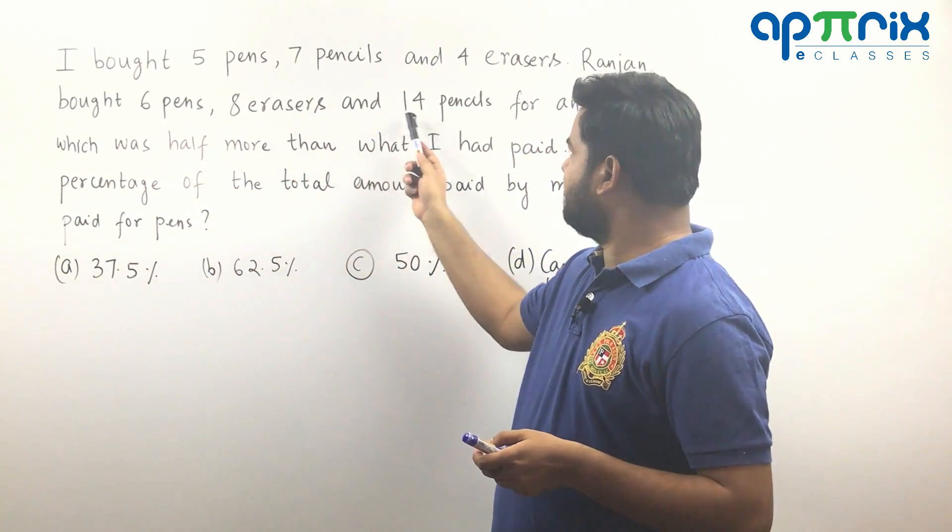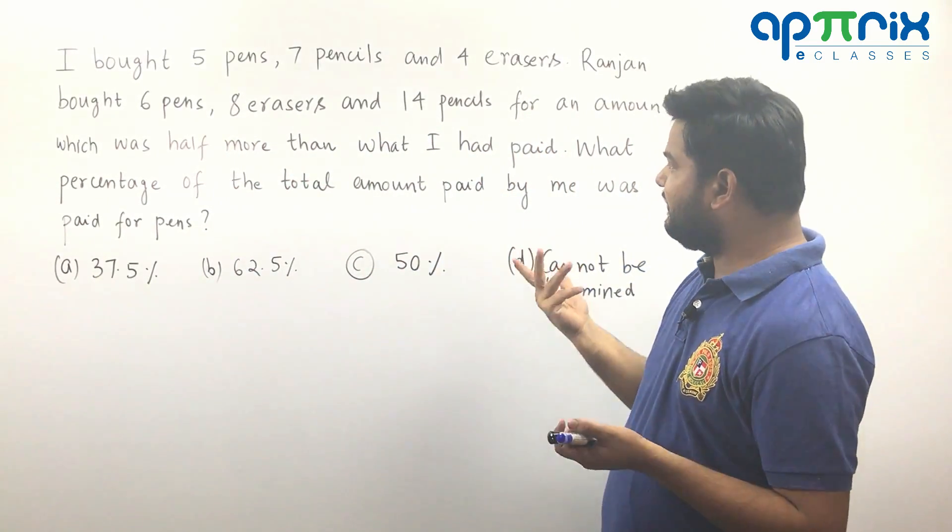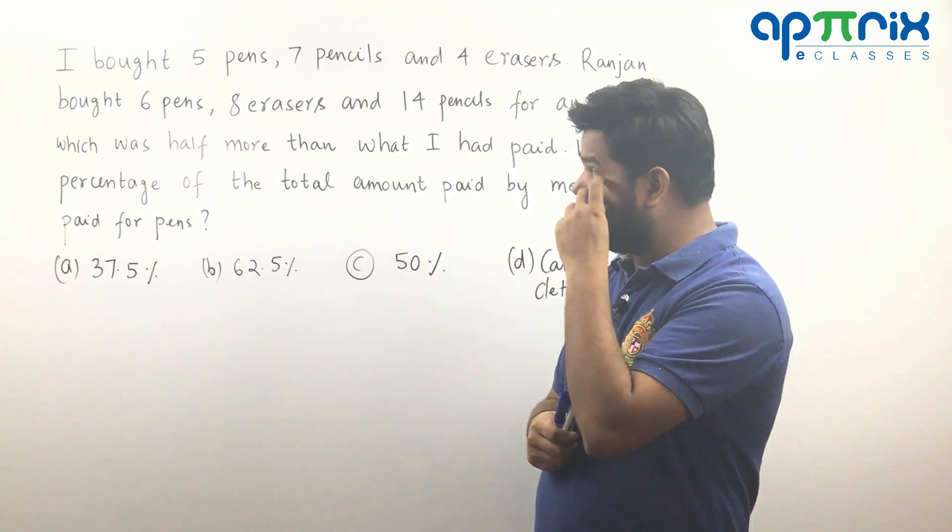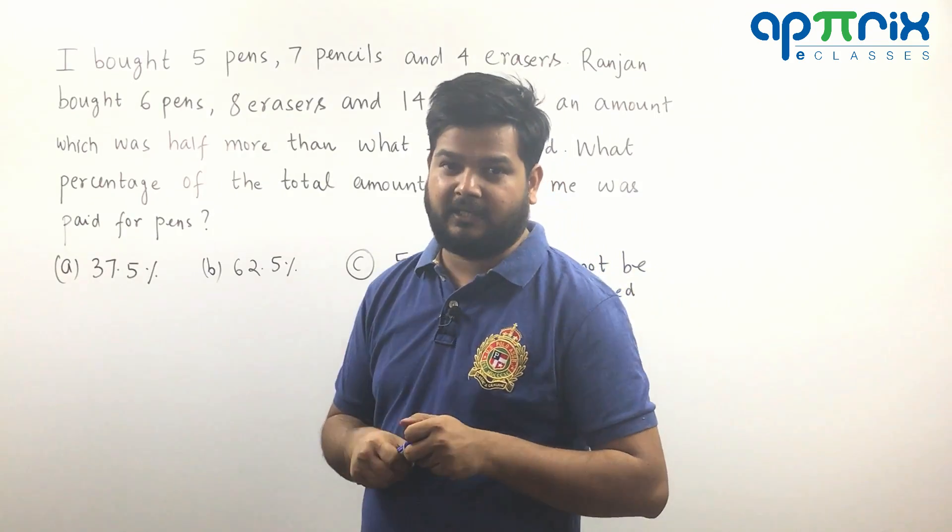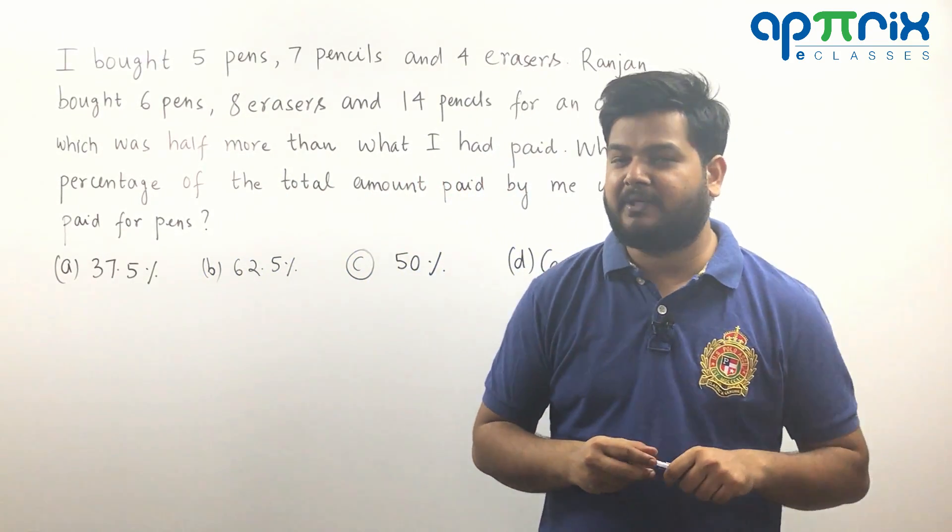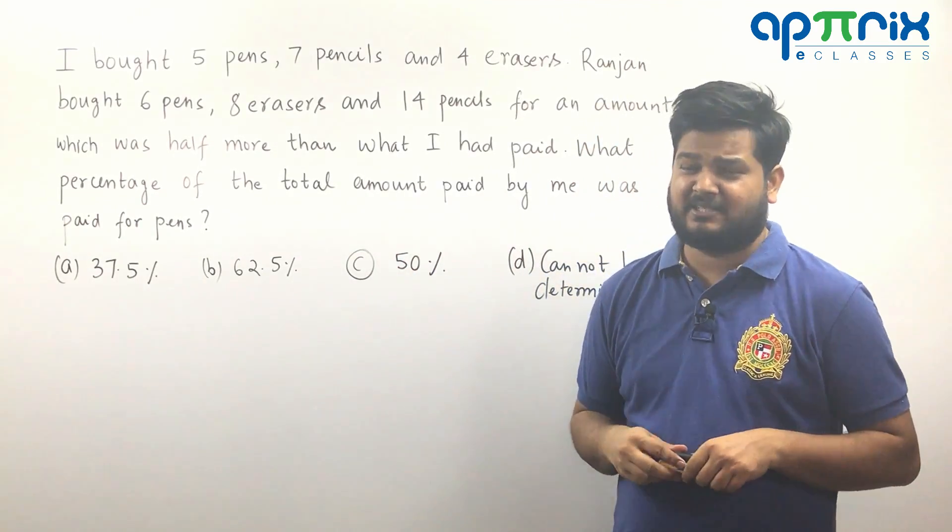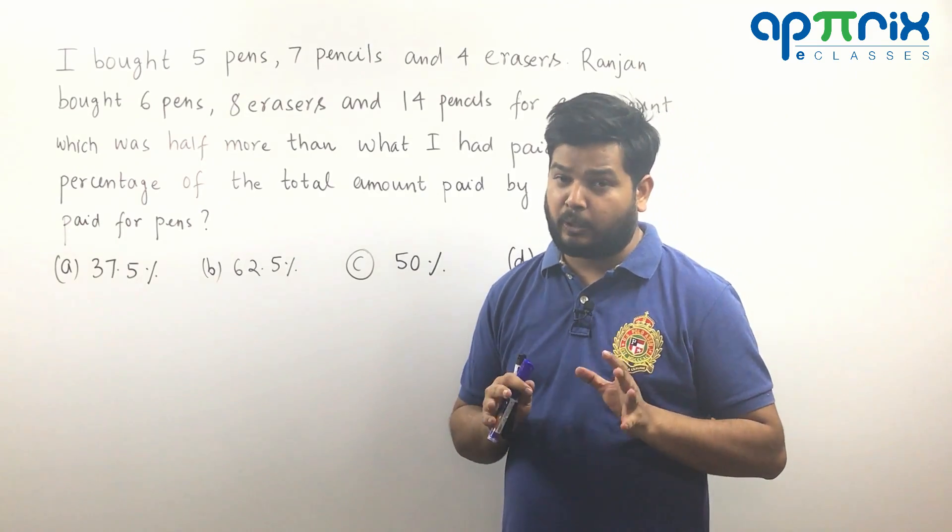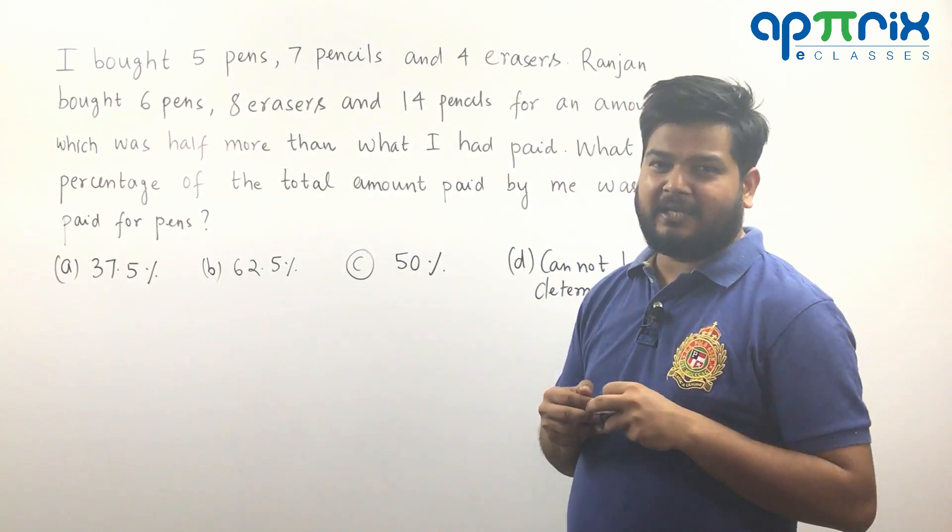Then pens, erasers and pencils. So there are essentially three variables and we are provided with two equations. So what they feel is that this cannot be calculated and therefore answer will be cannot be determined. But their happiness is very short lived. They say this question is damn easy, I will easily mark cannot be determined and move further. It's not like that. You need to be little careful.